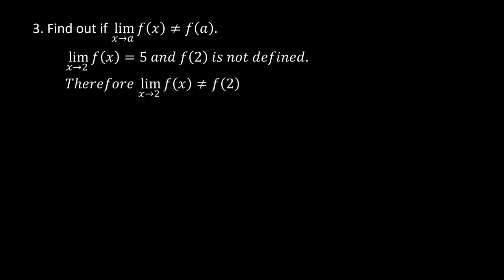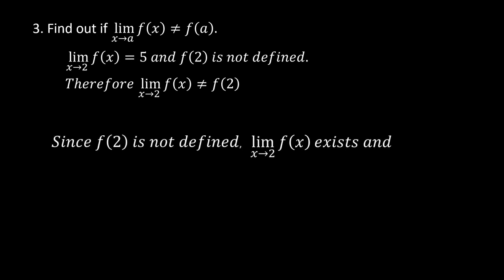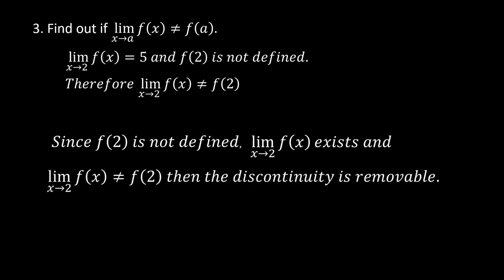Step 3: Find out if the limit of f of x as x approaches 2 is equal to f of 2. The limit equals 5 and f of 2 is not defined. Therefore, the limit of f of x as x approaches 2 is not equal to f of 2. Since f of 2 is not defined, the limit exists, and the limit is not equal to f of 2, the discontinuity is removable.